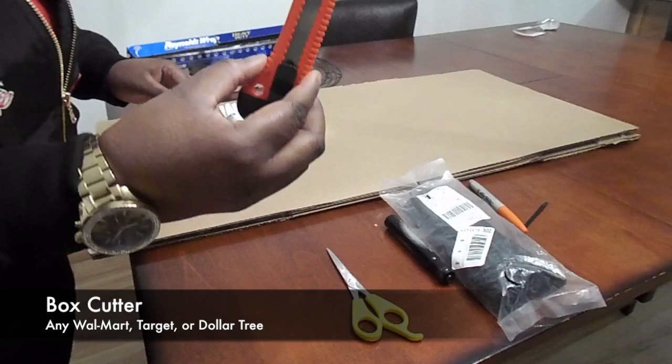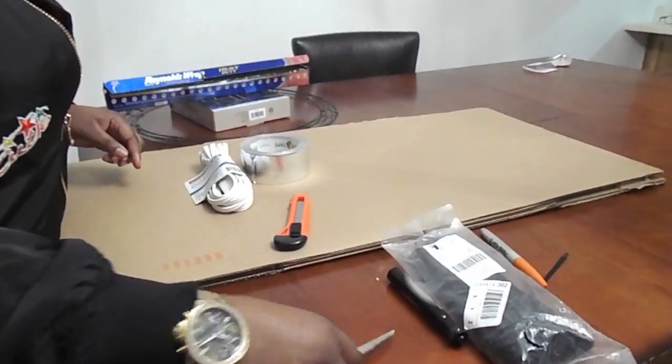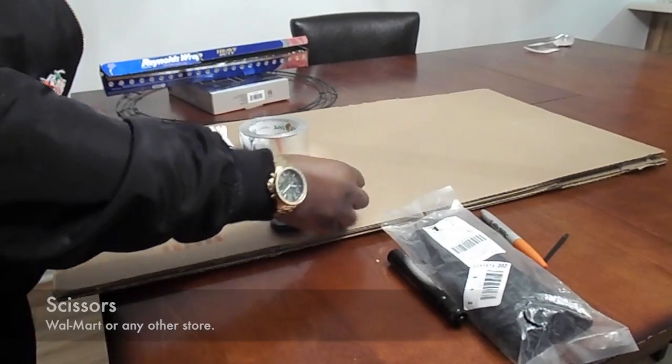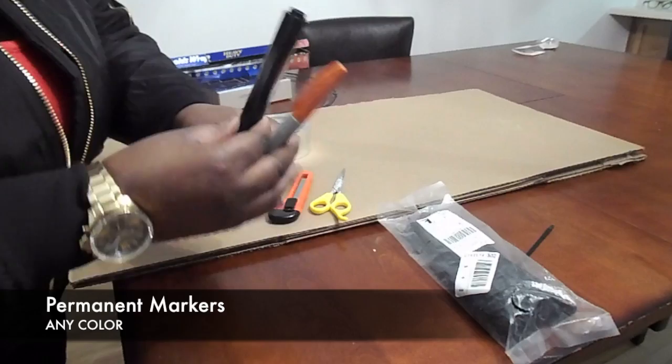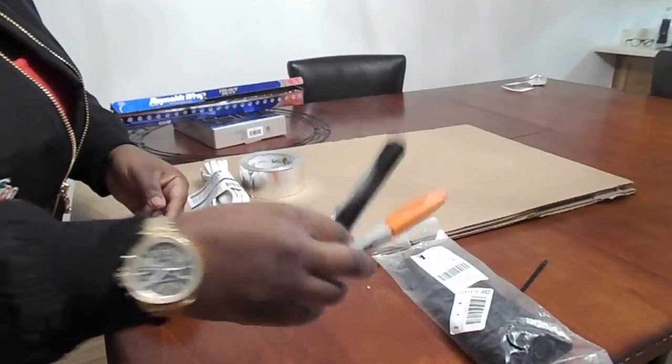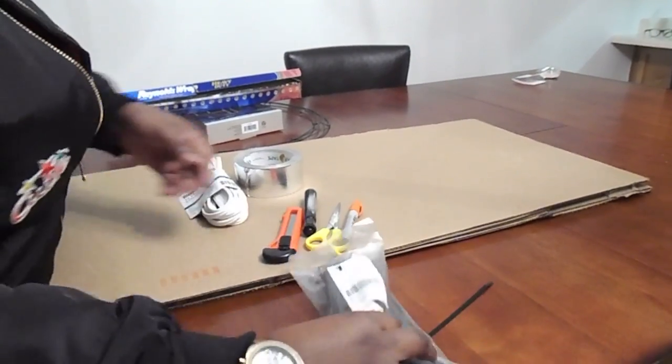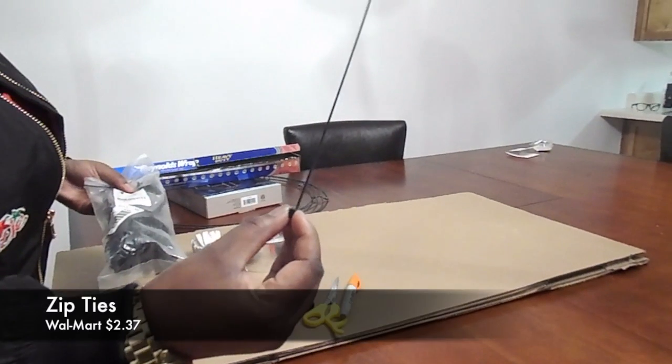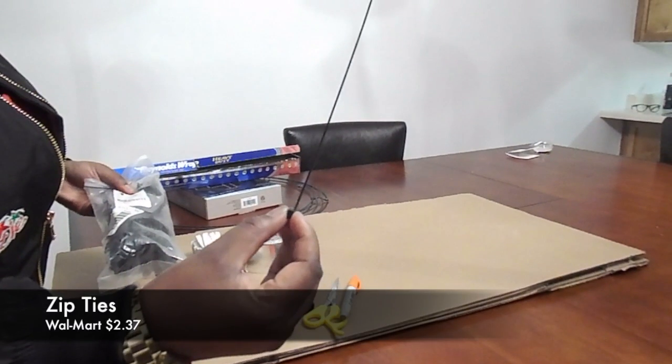You're going to need a box cutter, some scissors, some markers, and some zip ties, which you can get clear but I got black.